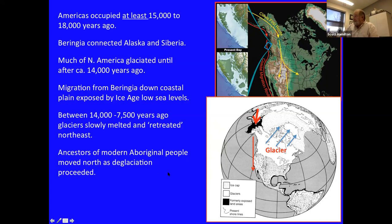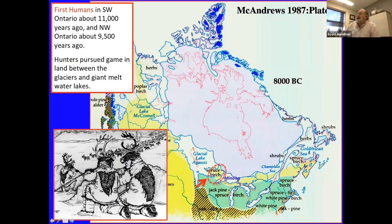North America was heavily glaciated until after about 14,000 years ago, where the ice slowly retreated northwards and eastwards towards the last remnant, which is on Greenland. As that ice retreated northwards, populations who had arrived in the Americas during the height of the ice age were able to move northwards following the deglaciation. What they were encountering was a very different world from what we see now — this is an illustration of how paleoanthropologists and paleoecologists have interpreted that ancient past.